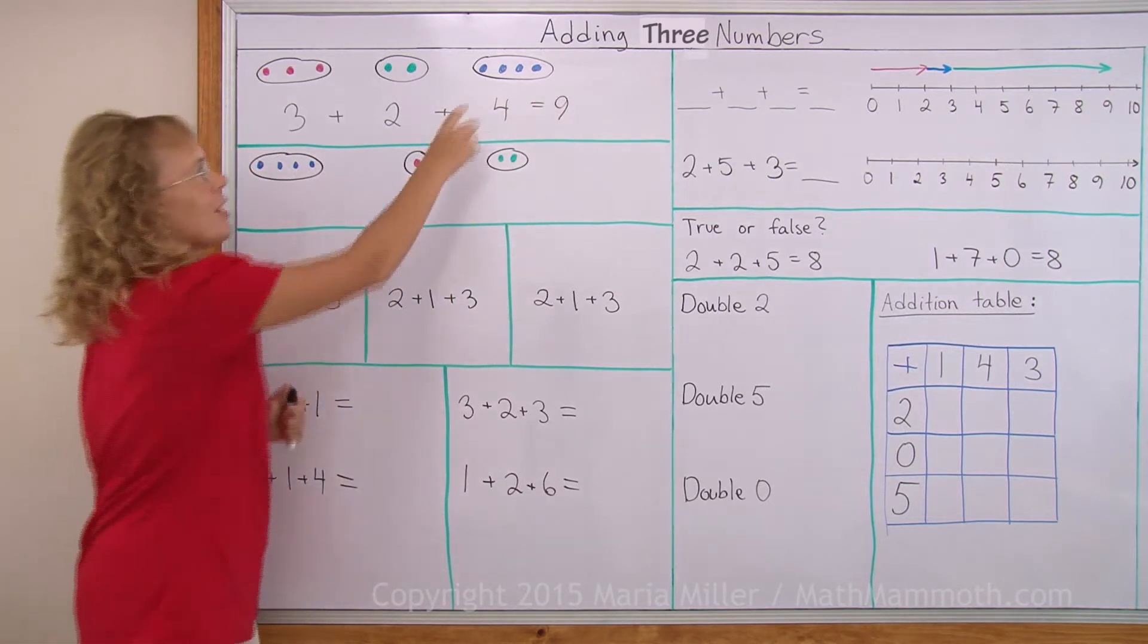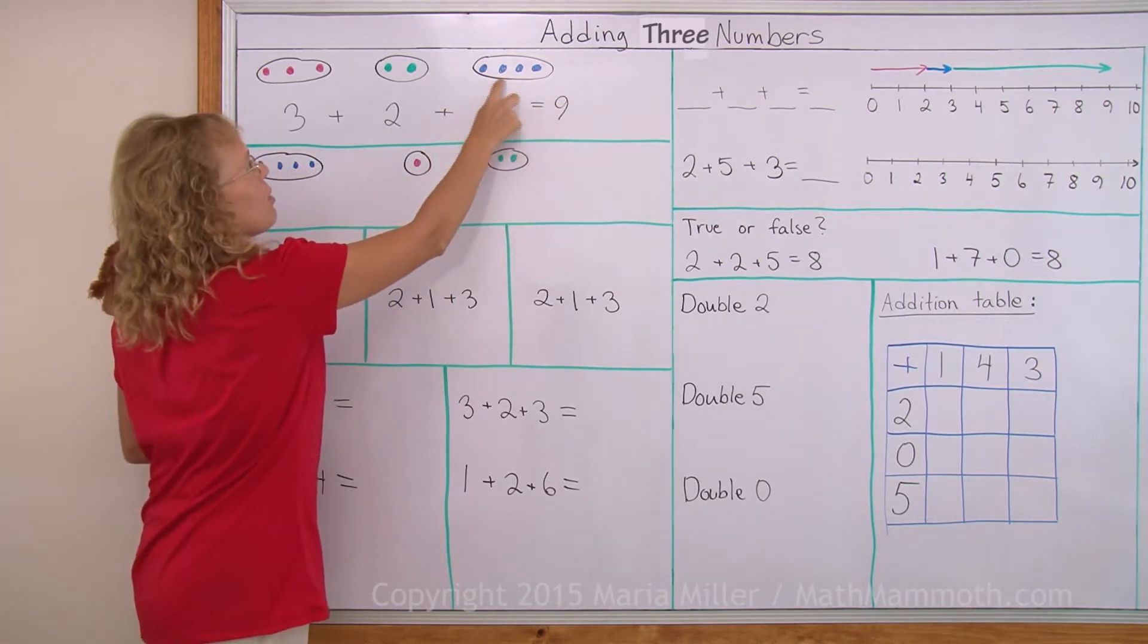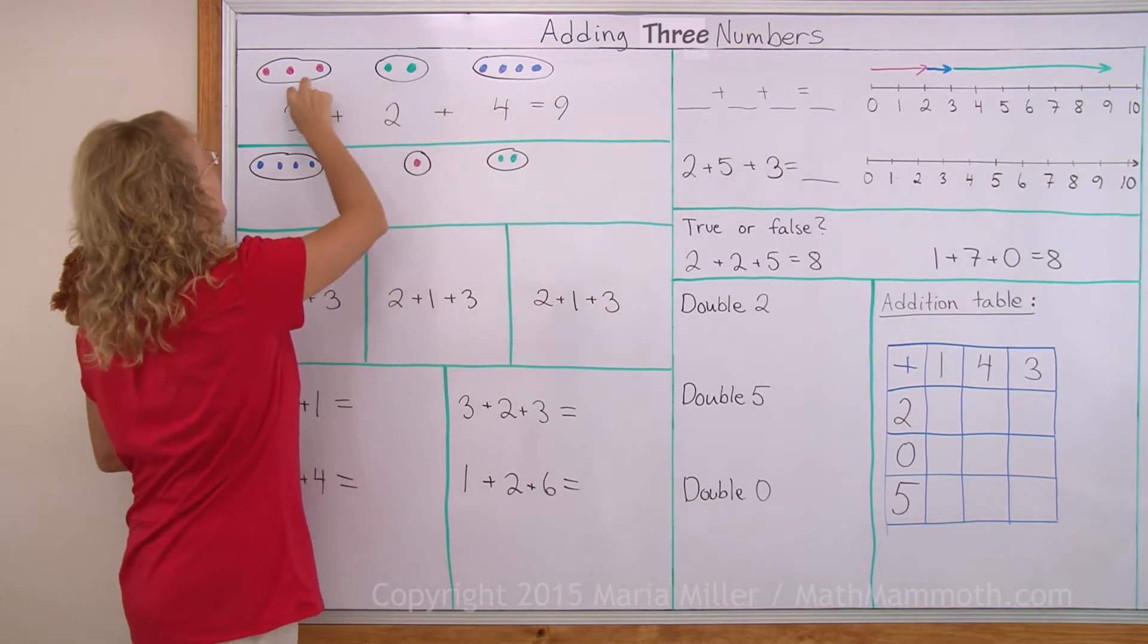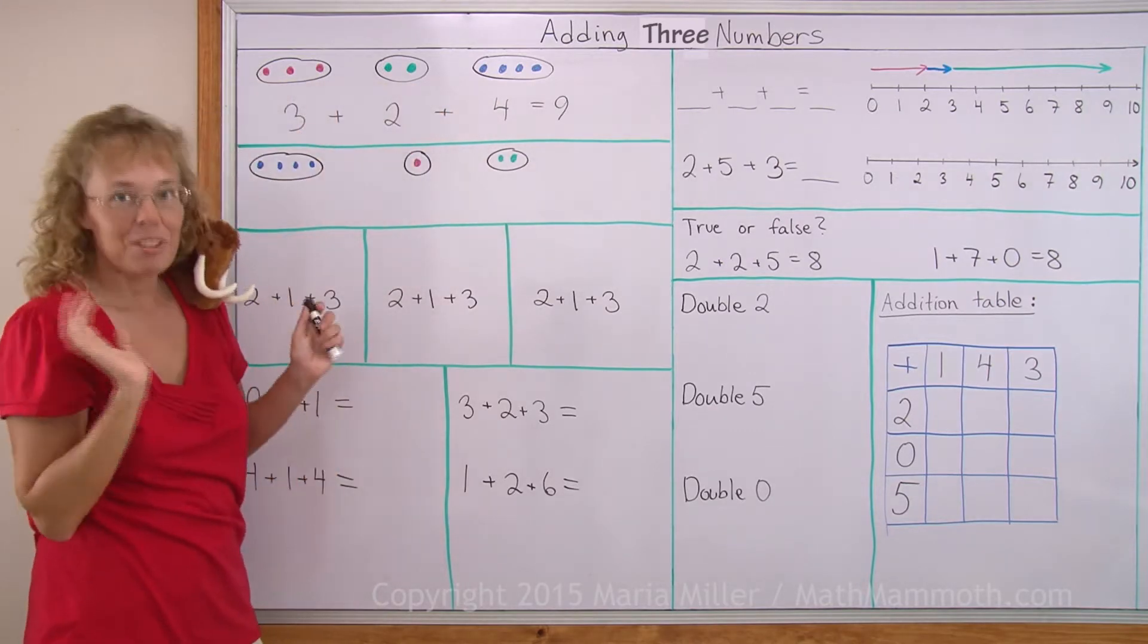I could also count it this way starting from here. One, two, three, four, five, six, seven, eight, nine. The same result.